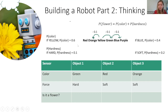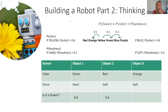Let me walk through these examples. Object one — green and hard: green is one step from yellow, so subtract 0.1 from 0.6, giving a color contribution of 0.5; it's hard so we add 0.1, giving a total probability of 0.6. Object two — red and soft: red is two steps from yellow, so 0.6 minus 0.2 equals 0.4 for color; it's soft so we add 0.2, giving 0.6 total. Object three — orange and soft: orange is one step from yellow giving 0.5; soft adds 0.2, giving a total probability of 0.7.